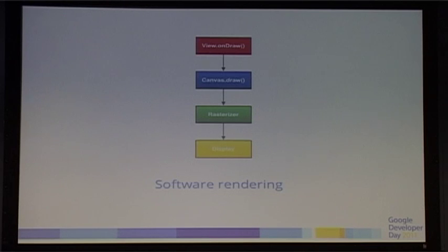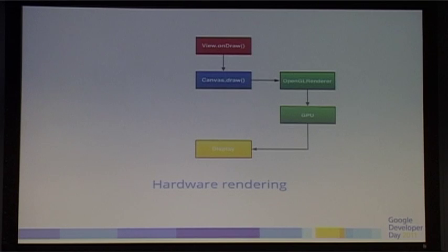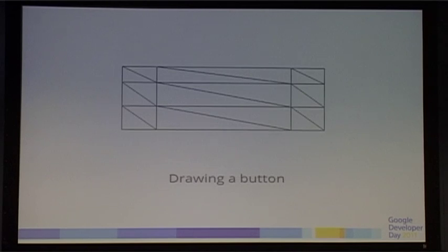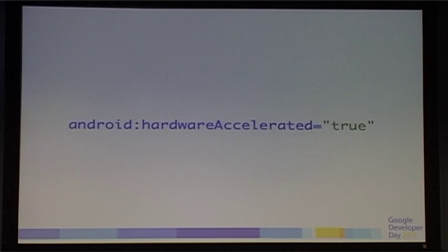The software rendering pipeline had your onDraw making the canvas draw, going to a software rasterizer, which went to the display. Now we have the canvas draw going to the GL renderer, which goes onto the GPU. That provides a lot of benefits. When drawing a list view, those fade-outs at the top and bottom, buttons, paths — all these things can now be done in hardware just by setting hardwareAccelerated equals true.